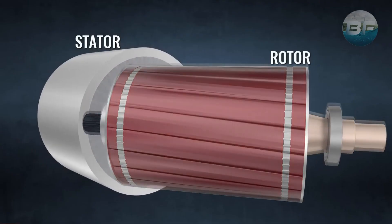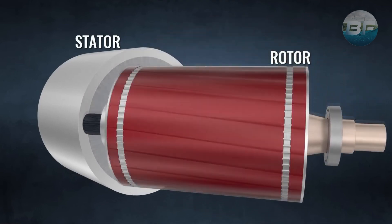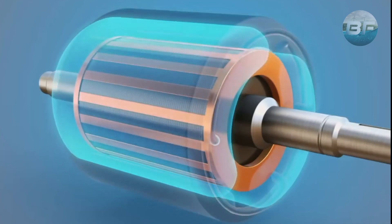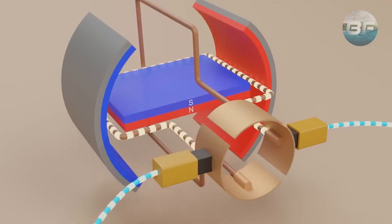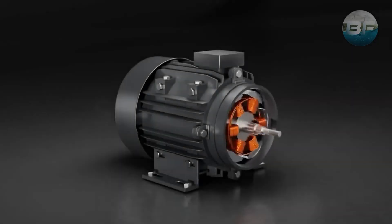Electric motors consist of a stator, which generates a magnetic field, and a rotor, which is an electromagnet that rotates inside the stator. When an electric current flows through the stator, it creates a magnetic field that induces a magnetic force on the rotor, causing it to rotate and generate mechanical motion.